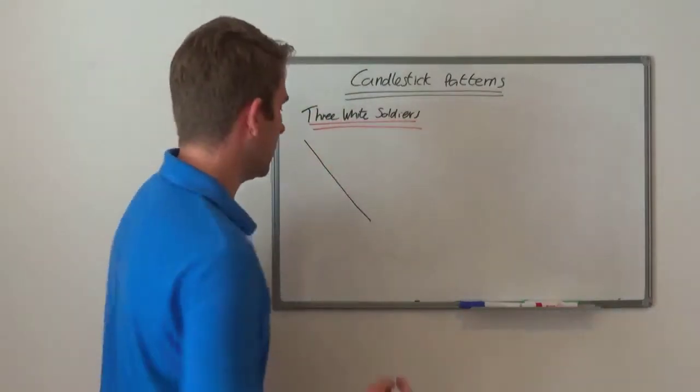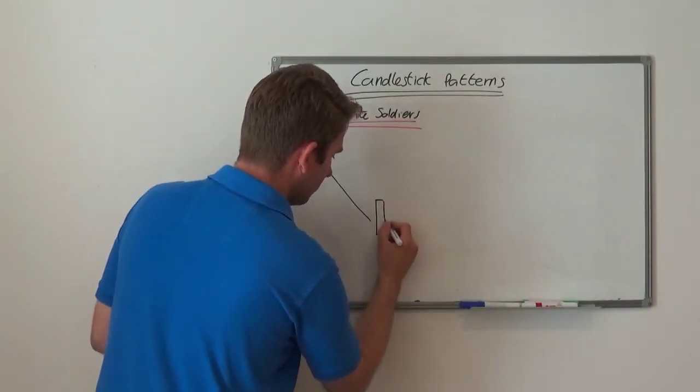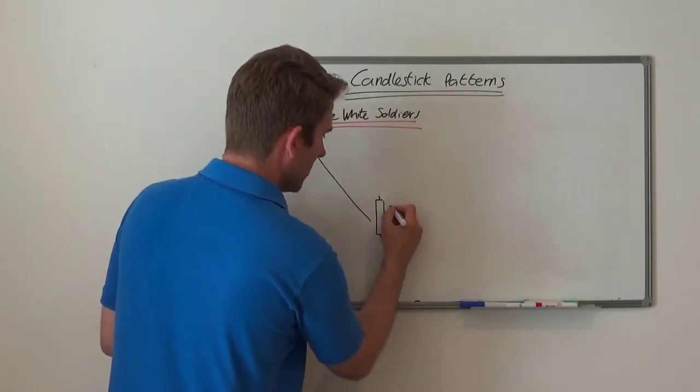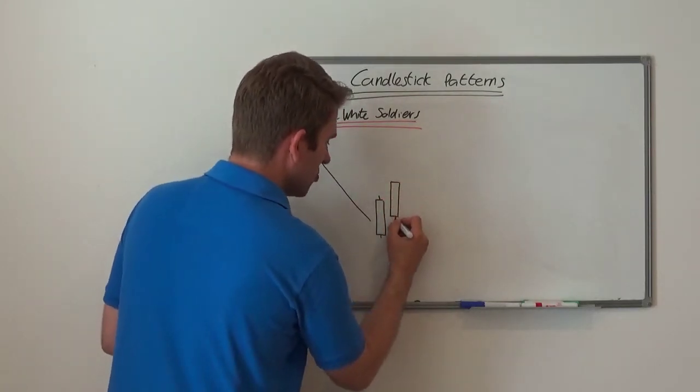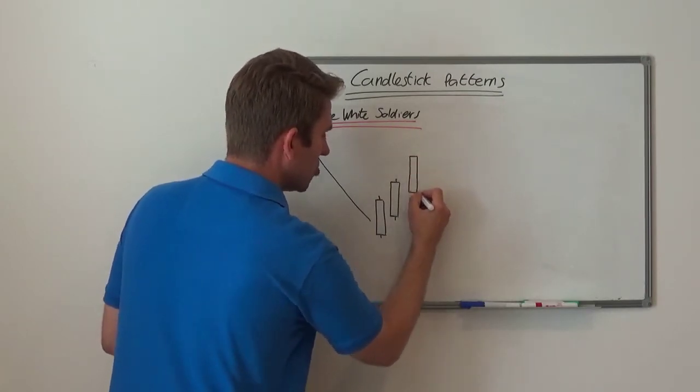We see number one here, a long candle with a pretty short tail and wick. A second candle here, again pretty short tail and wick. A third candle here, again a pretty short tail and wick.